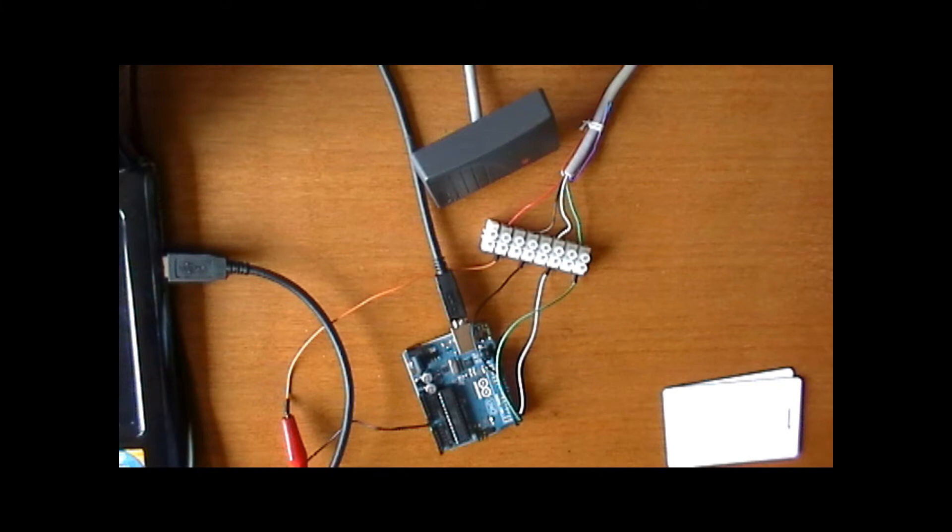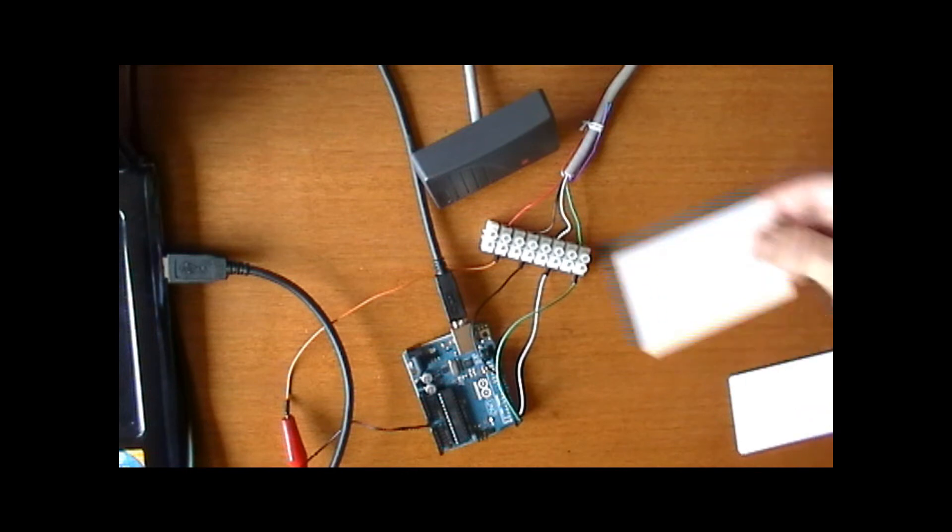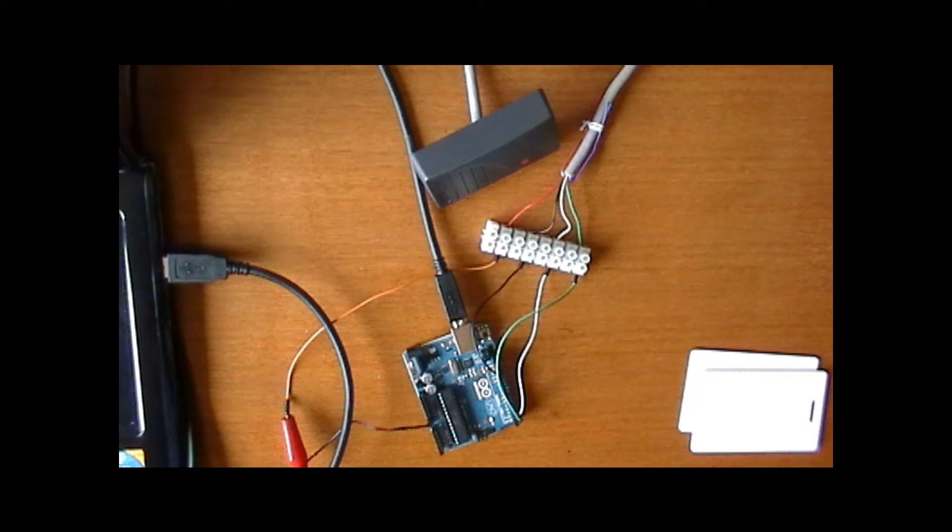Now I have uploaded the code. And whenever you scan the card, it'll print out how many bits the card is and it'll print out the card number on the screen of the computer. So I can do that now. I'll move the camera so you guys can see that.